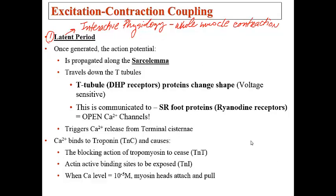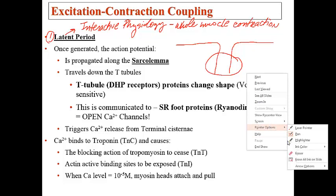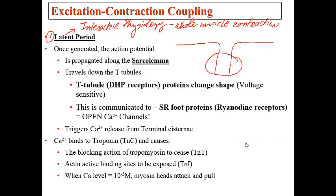During the latent period, events occur at the triad. The action potential continues down the sarcolemma, which folds inward to form T-tubules. The point at which there are two terminal cisterns and one T-tubule is referred to as the triad. There would be one sarcoplasmic reticulum on each side, and the end of the sarcoplasmic reticulum is the terminal cistern, then the T-tubule in the center. The area is highlighted in red as the triad.